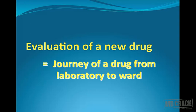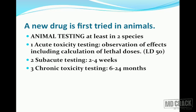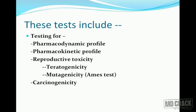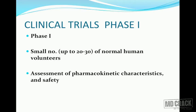Now we discuss how a new drug is brought to the market — evaluation of a new drug, or the journey of a drug from laboratory to the ward. A new drug is first tried and tested in animals — animal testing required in at least two species. This includes acute toxicity testing to observe effects and calculate lethal doses, sub-acute testing lasting two to four weeks, and chronic toxicity testing lasting six months to two years. The purpose is to know the pharmacodynamic and pharmacokinetic profile, reproductive toxicity including teratogenicity, mutagenicity (Ames test), and carcinogenicity.